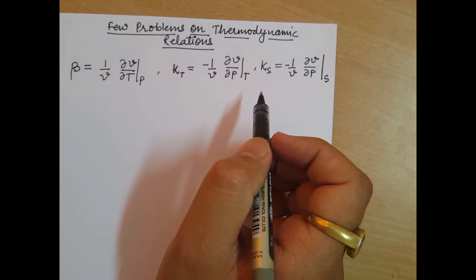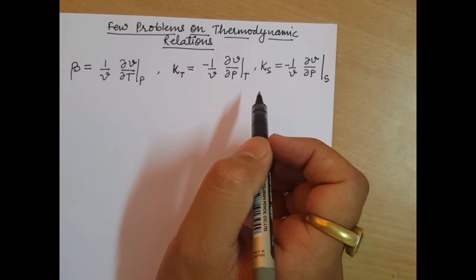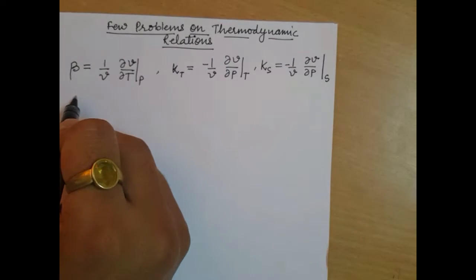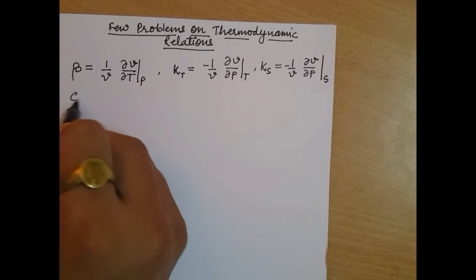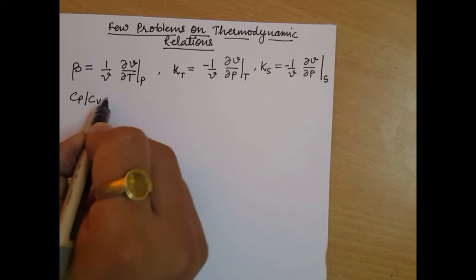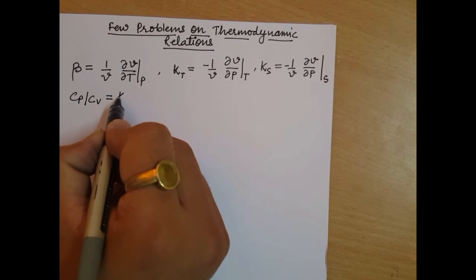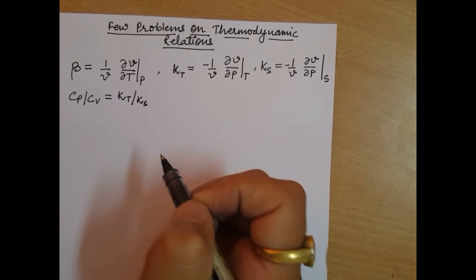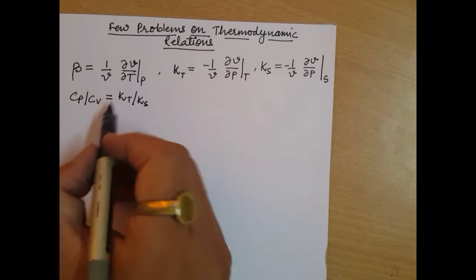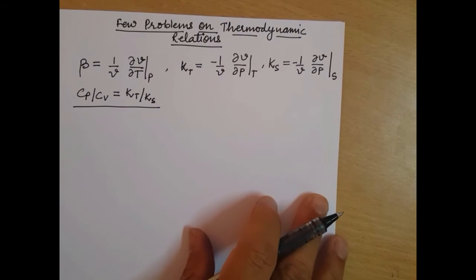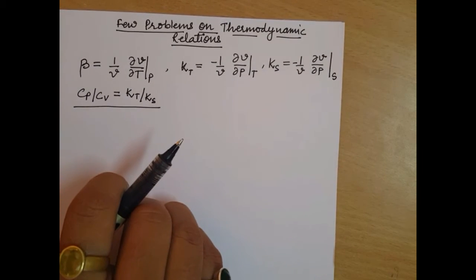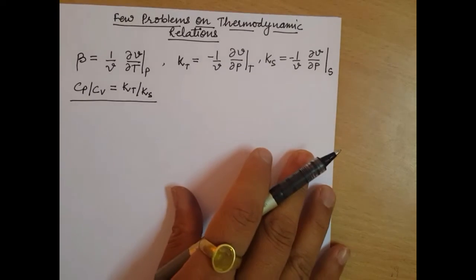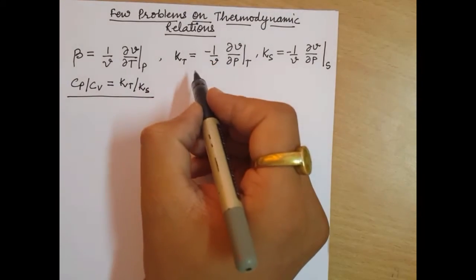The first problem asks us to prove that Cp by Cv is equal to KT upon KS. So we need to prove that this ratio Cp by Cv equals KT by KS. The starting point for this will be our TdS relations.